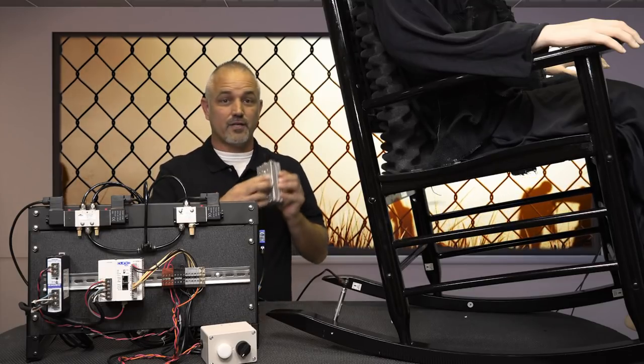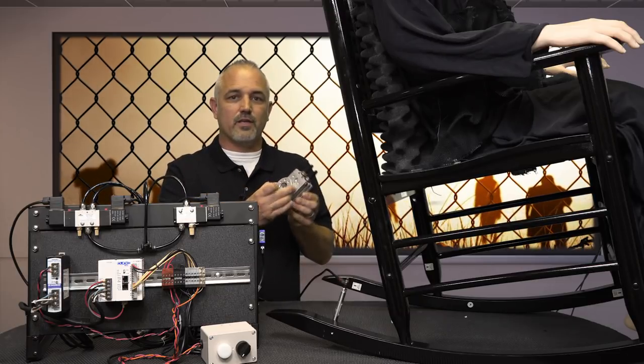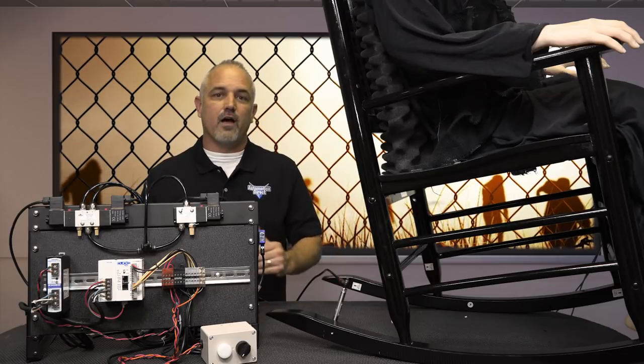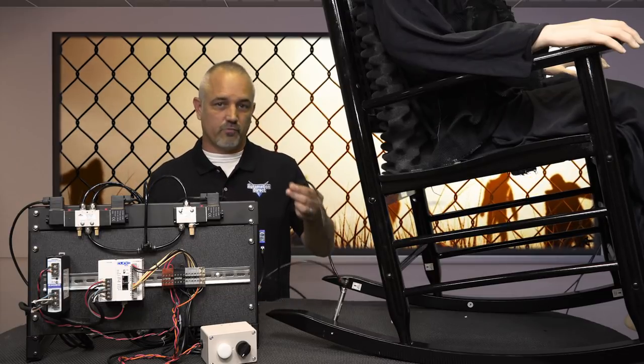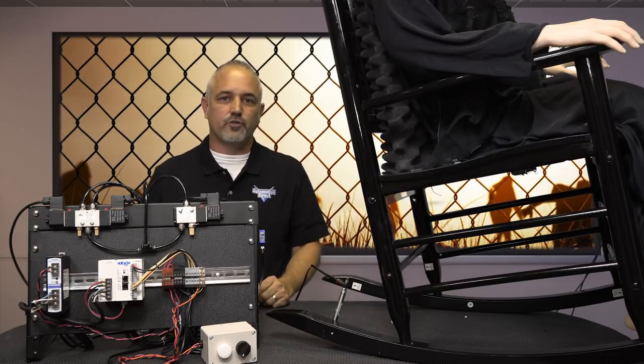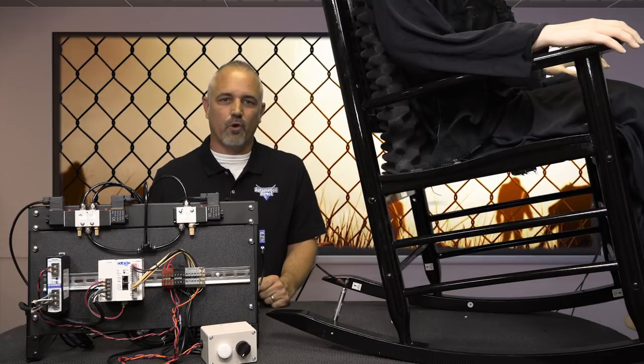These rotary actuators are great, allowing us to control the degrees of rotation and by using flow control valves, we can adjust the speed. The valves are all plumbed with flexible tubing and our push to connect Nitro fittings. Each valve is wired to an output on our PLC, Y1, Y2 and Y3.